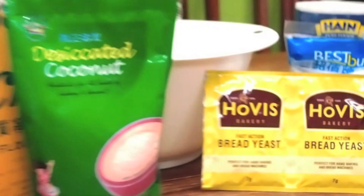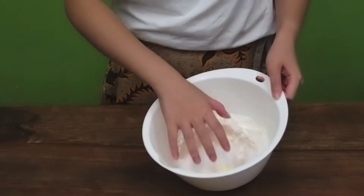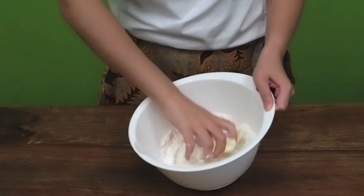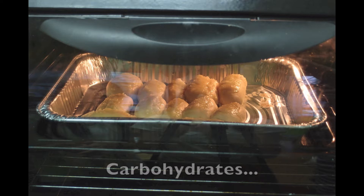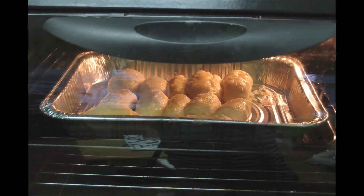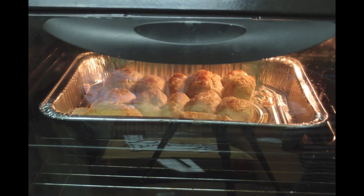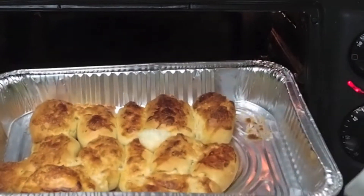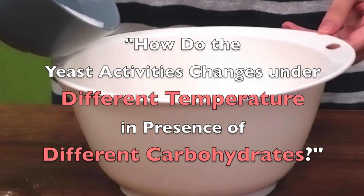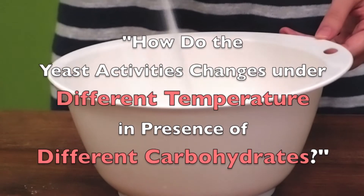The answer is easy — that's because of yeast. Yeast is usually active in the process of bread making for softening the texture. Under different conditions such as temperature, carbohydrates, and etc., the activity of the yeast changes and it gives different texture to the bread. How does the yeast activity change under different temperatures in the presence of different carbohydrates?